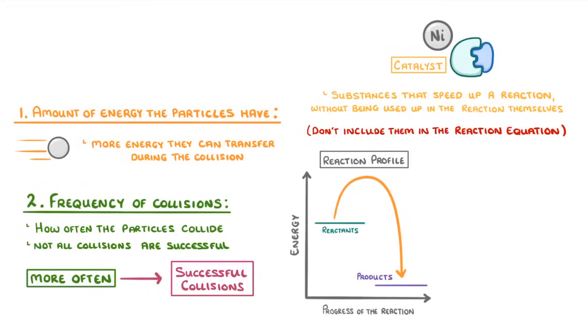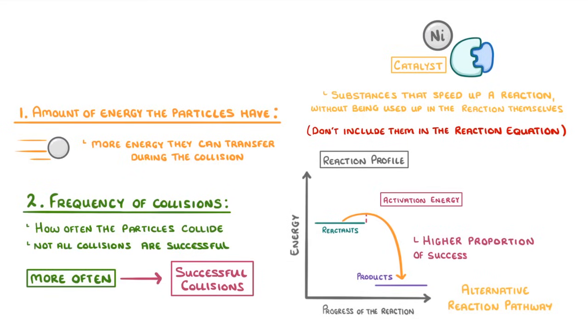Now, this distance between the reactant's energy level and the very top of the curve is the activation energy, which remember is the energy that the collisions have to have before they can react successfully. What a catalyst does is lowers this activation energy, by providing an alternative reaction pathway, and this means that there will be a higher proportion of successful collisions.